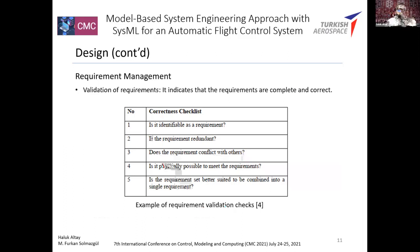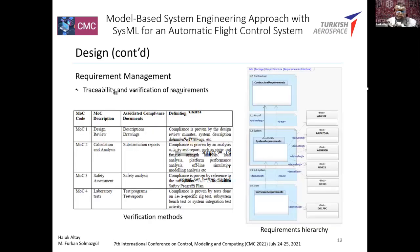The second stage of requirements management is validation of requirements. It indicates that requirements are complete and correct. The validation process is usually done using a checklist of requirements. Requirements are updated by considering missing and inaccurate statements resulting from the checklist and analysis. Sample checklist questions include: is it identifiable as a requirement? Is it physically possible to meet the requirement? Does the requirement conflict with others?